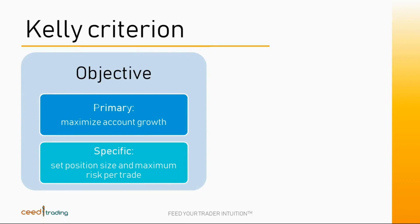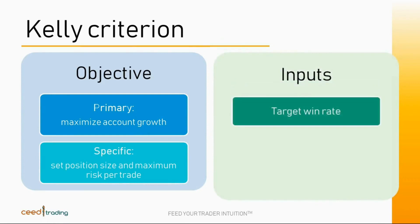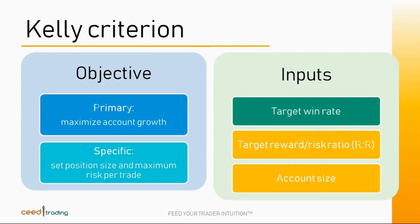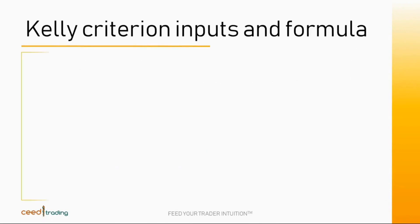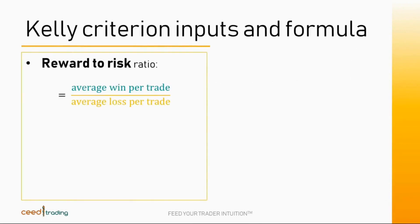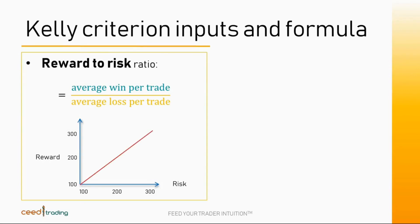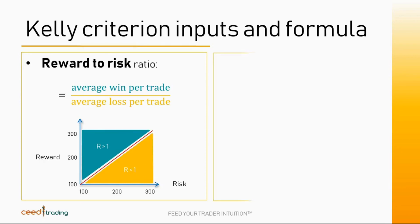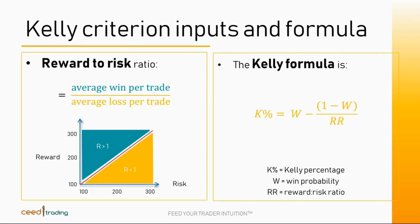The required inputs for calculating the Kelly percentage are the target win rate, the target reward over risk ratio, and the account size. The reward over risk ratio is the ratio of the average win per trade to the average loss per trade. It is also called risk multiple or R-multiple. If your average win trade is $300 and your average loss trade is $150, then you have a reward over risk ratio of 2 to 1, or an R-multiple of 2. The red line represents a reward over risk of 1. Values in the green zone have a risk multiple of greater than 1 and in the orange zone of less than 1. The formula for the Kelly percentage is the win probability minus 1 minus the win probability divided by the reward over risk ratio.